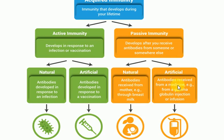Artificial passive immunity is when antibodies are received from outside through medicines. An example is the immunoglobulins injection — when you receive immunoglobulins, which are actually antibodies, these preformed antibodies are introduced into the body. That is an example of artificial passive immunity.